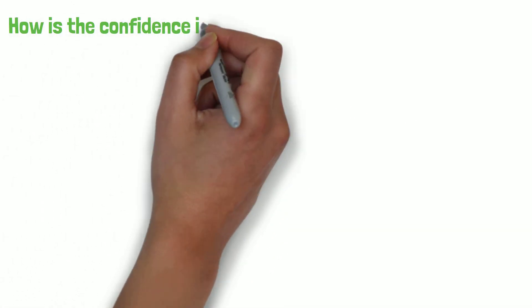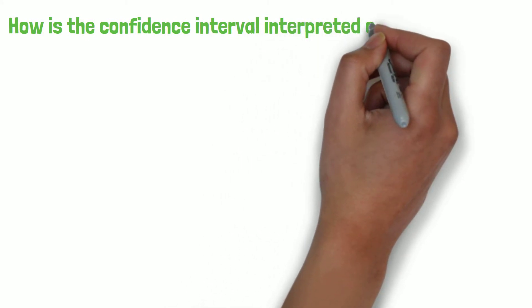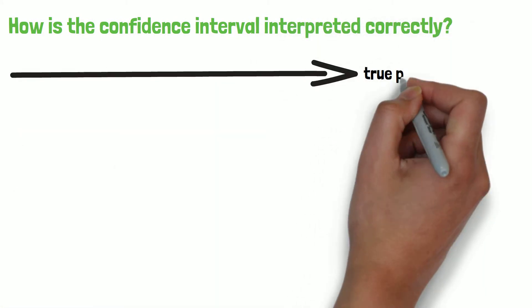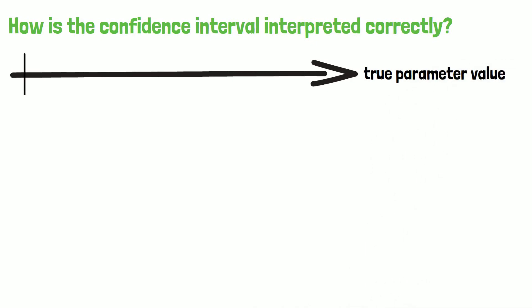How is the confidence interval interpreted correctly? The confidence interval on the 95% level is the interval that covers in average the true parameter value in 95 of 100 repeated random samples taken from the same population.